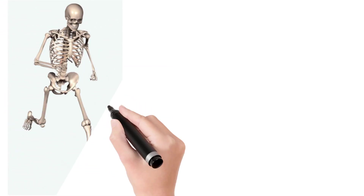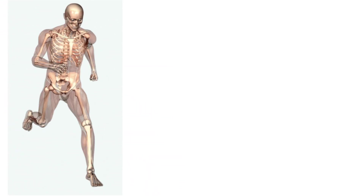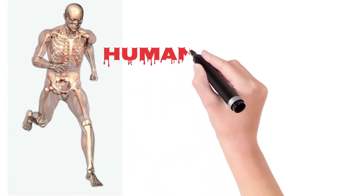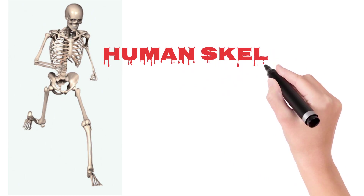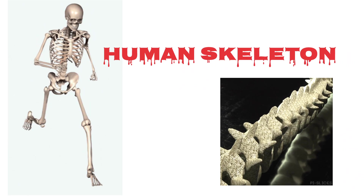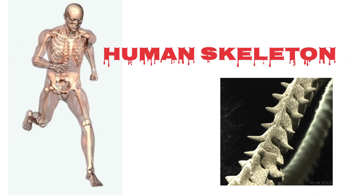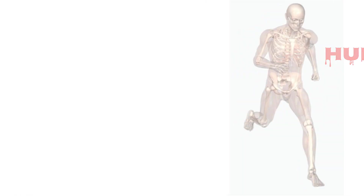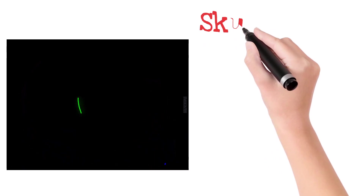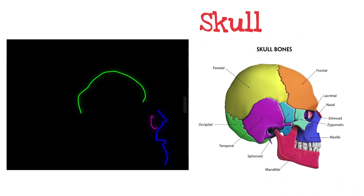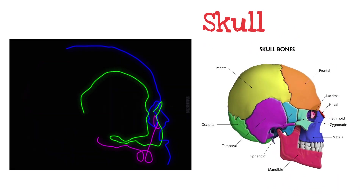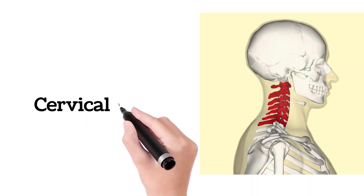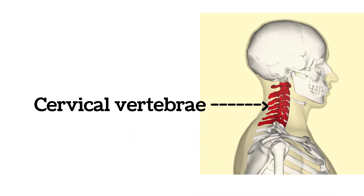Hi everyone, welcome to our channel. In this video I'm going to explain the bones in the human skeleton, their names and uses. The first one is the skull, and in the neck there will be neck bones called cervical vertebrae.